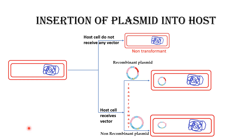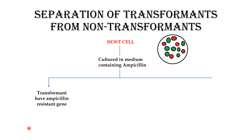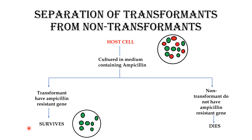The question arises: how will you distinguish amongst them? For that, we need selection using antibiotic resistance. First, let us separate the transformants from the non-transformants. The host cells are cultured in a medium containing ampicillin. The transformants have the ampicillin resistance gene, therefore they will survive. The non-transformants do not have the ampicillin resistance gene, therefore they will die. Thus, we successfully separate the transformants from the non-transformants.